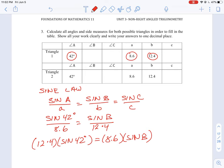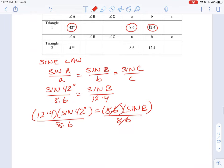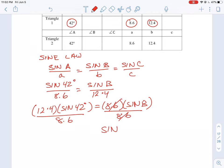But you can see at this point what we need to do is divide out the 8.6 and essentially bring it back. So our equation here is just going to give us sine B is equal to 12.4 times sine of 42 all over 8.6.